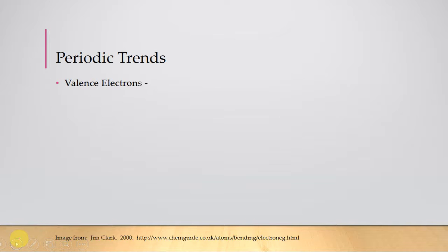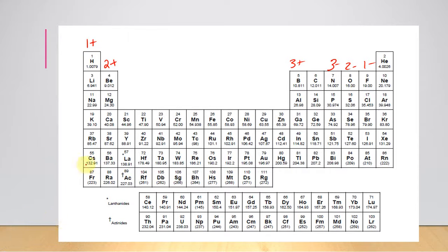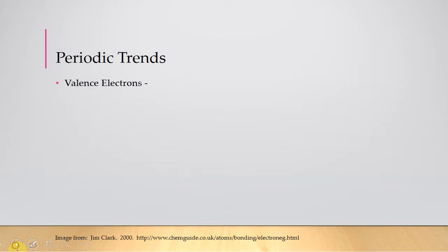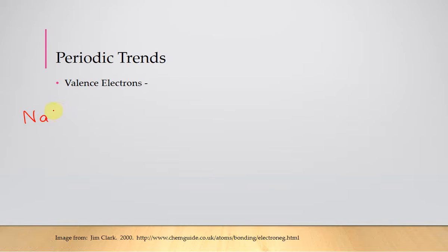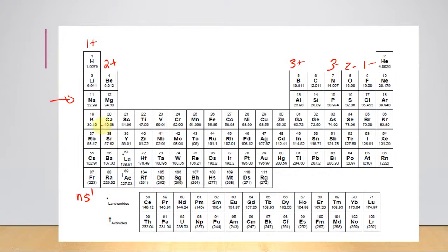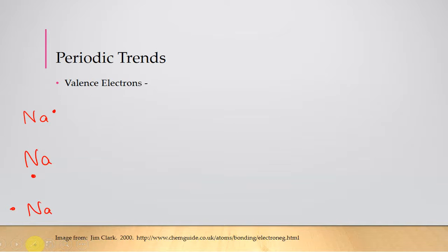Let's go back to some of those trends. Remember we talked about valence electrons before, but I'm going to do it again here. If we look at group one, remember this ends in NS1 — so 1S1, 2S1, 3S1. They all have one valence electron. So if we look at sodium, it's in group one and has one valence electron — you can draw it as just a dot indicating that electron. Magnesium is in group two; this ends in NS2, so it's got two valence electrons. If you can't remember that, it's group two, so two valence electrons.